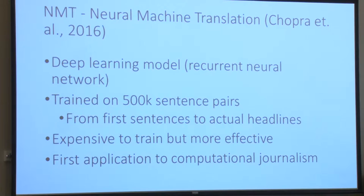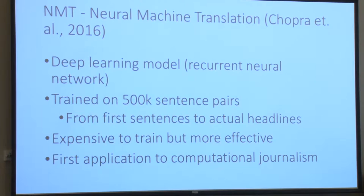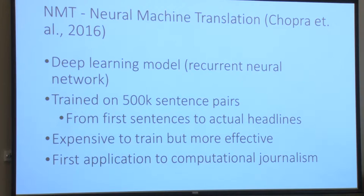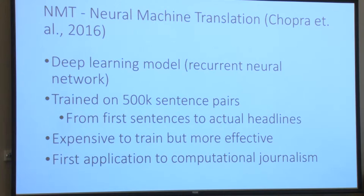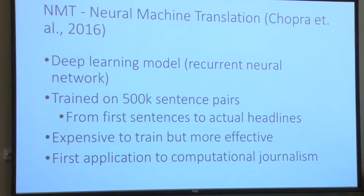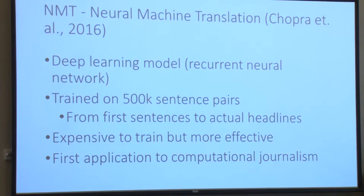The third algorithm is the most interesting one — the state-of-the-art deep learning model. The underlying model is a recurrent neural network. Different from the other two algorithms, this is a fully trained model. We trained this model with 500,000 sentence pairs, learning the mappings automatically from the first sentence of the article to the actual headline. It's expensive to train — sometimes it takes days. But in our evaluation, it generates more effective headlines. It's also, to our best knowledge, the first attempt to apply a deep learning model in computational journalism and deploy it at the Washington Post in production.